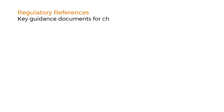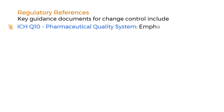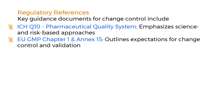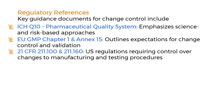Key guidance documents for change control include ICH Q10 Pharmaceutical Quality System, which emphasizes science and risk-based approaches; EU GMP Chapter 1 and Annex 15, which outline expectations for change control and validation; and 21 CFR 211 Parts 100 and 160, the US regulations requiring control over changes to manufacturing and testing procedures.